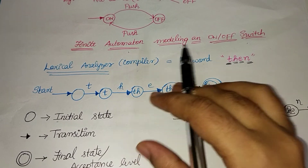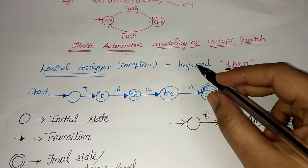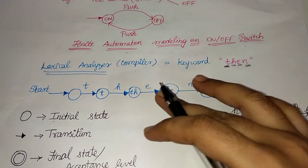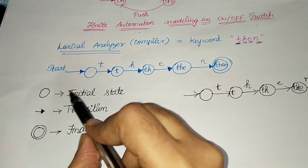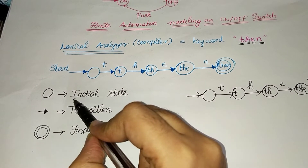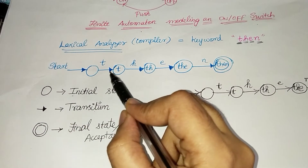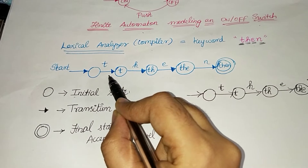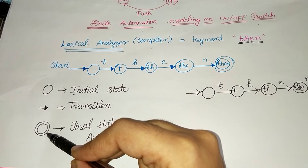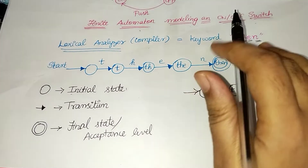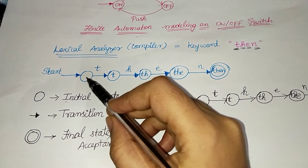If you want to use this example, I will show you the example of the keyword THEN — I will show you how to process this. This is the initial state. If you want to go to the initial state, you will go to the next step. The arrow mark is a transition — one state to another state. The double circle is the final state.